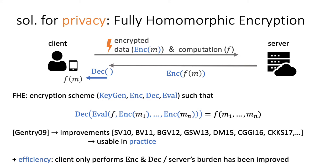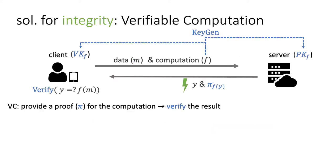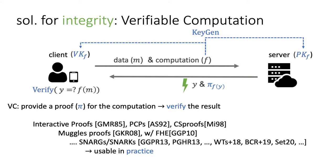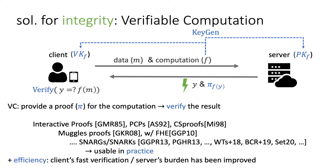We remark that the client is efficient since it only performs encryption and decryption, while the server's computational burden has been improved. On computation integrity, verifiable computation can be a good solution. In verifiable computation, a server provides a proof for the computation, and a client can verify the result with it. There has been much work on VC, and now we can see that they are used in practice as SNARKs. On efficiency of this solution, the verification is usually efficient, independent of the computation, and the server's burden has been improved.